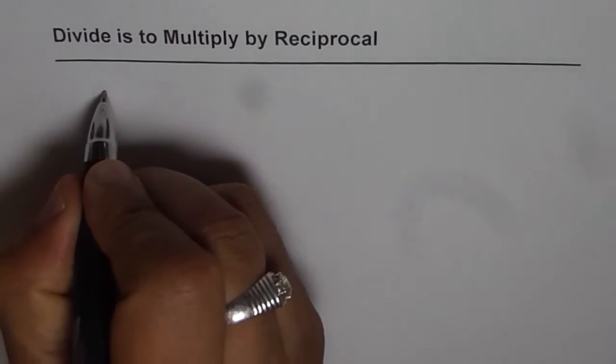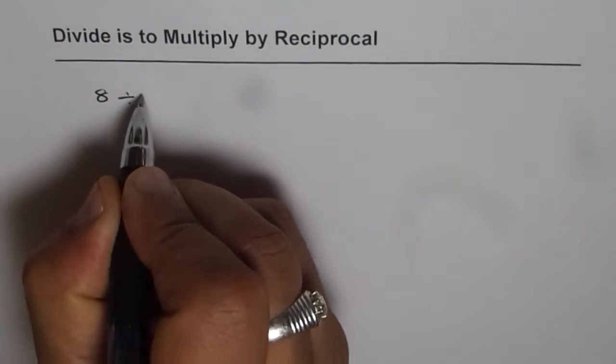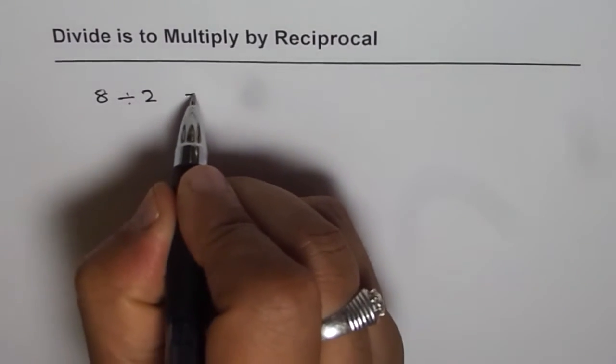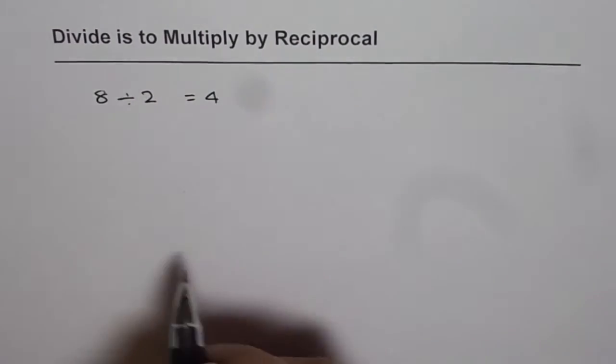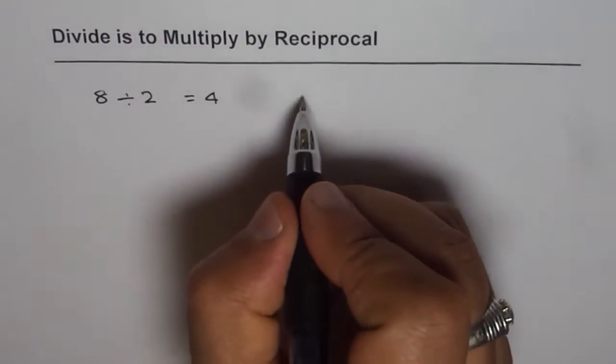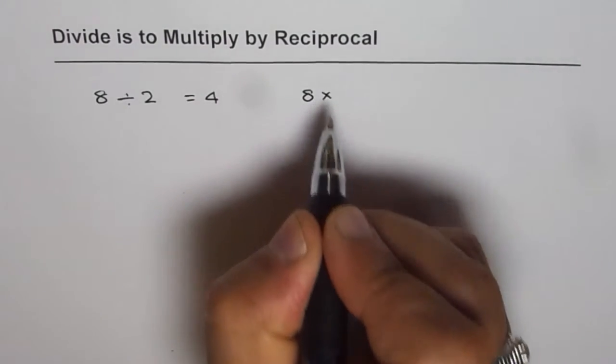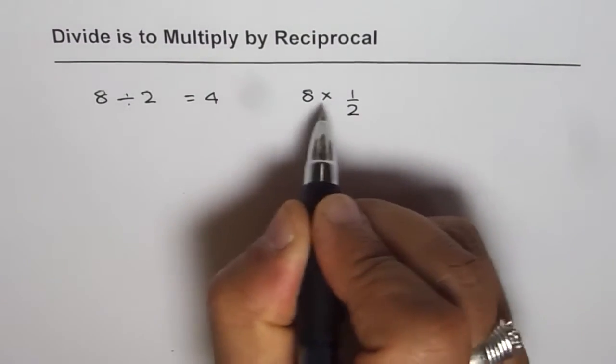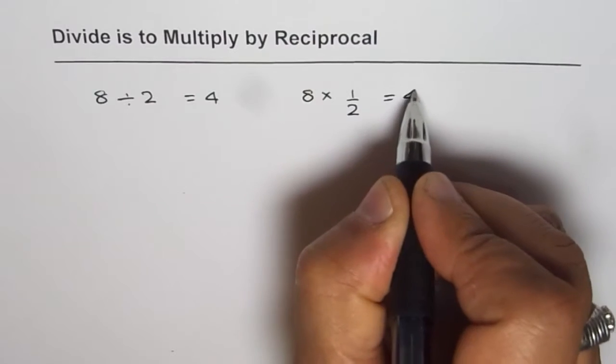Let us divide 8 by 2. What do we get? We get 4. Well, this is same as multiplying 8 by half. Half of 8 is also 4.